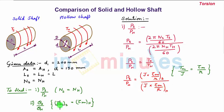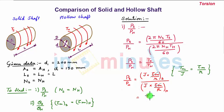Since it is given that the maximum shear stress in the solid shaft equals the maximum shear stress in the hollow shaft, the τM terms cancel. So PS/PH simplifies to (JS / JH) × (R / r).